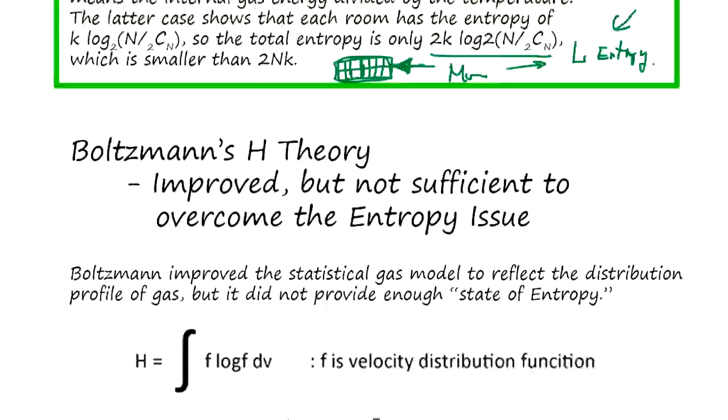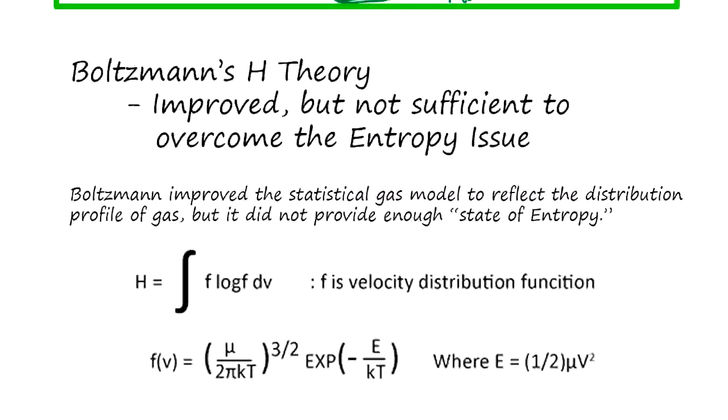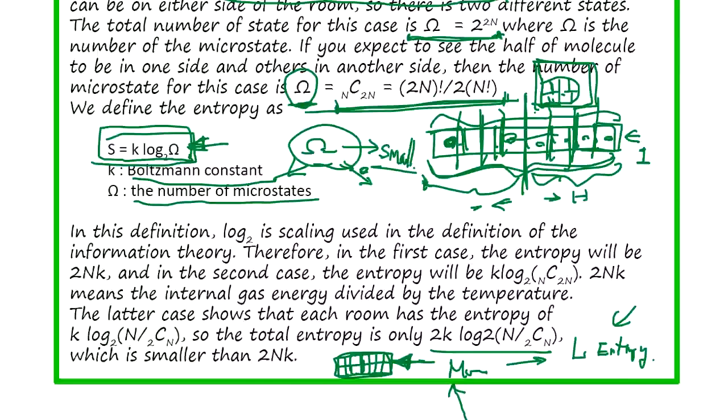So Boltzmann had the ideal gas theory. He tried to improve it, called H-theory, and tried to get the state into the equation, and was partially successful. Now he can include a distribution of state. But not as detailed as Gibbs' entropy definition. So this is halfway successful and it's not really defining entropy itself. So this Gibbs entropy definition became famous.